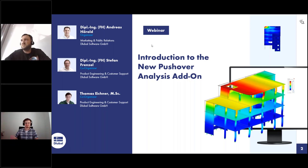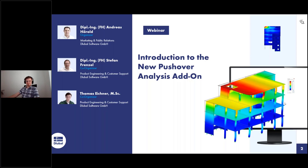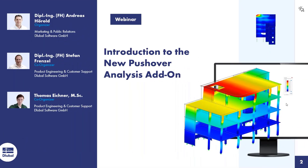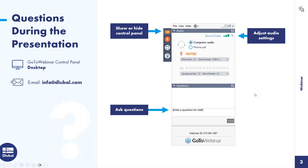Thank you for your introduction. Then we can switch off our webcams so that the attendees can see the full screen. For attendees participating for the first time, you can show or hide the control panel with the arrow here, and then enter a question. We will answer you. If you don't get an answer during the webinar because there are too many questions, you will get an email afterwards. The other way is to watch the entire webinar and then email questions to info at dlubal.com.